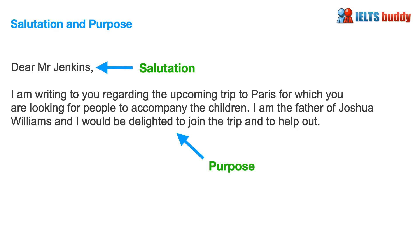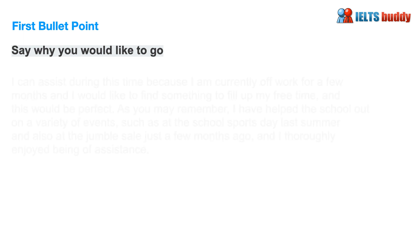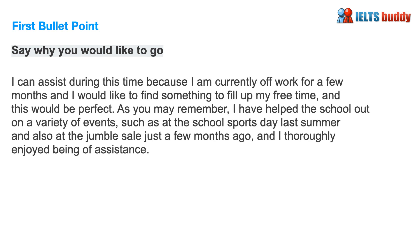You could use a first name, for example 'Bob Jenkins', if you wanted. Then you give the purpose of the letter: 'I'm writing to you regarding the upcoming trip to Paris for which you are looking for people to accompany the children.' This comes from the prompt. The writer has also noted that they're the father of Joshua Williams and would be delighted to join the trip and help out.